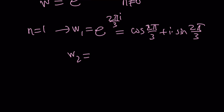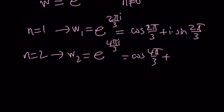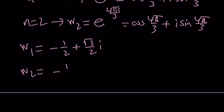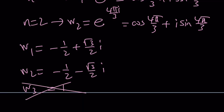The second solution comes from n equals 2, giving e to the power 4πi over 3. Writing these in standard a plus bi form: w₁ equals negative one-half plus (root 3 over 2)i, and w₂ equals negative one-half minus (root 3 over 2)i. In other words, they are complex conjugates — not opposites. These are two of the cube roots of 1, and the excluded root is w₃ equals 1.